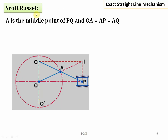Number three is Scott Russell mechanism, which is also an exact straight line motion mechanism. This is the inversion of a single slider crank chain. It consists of four links, three turning pairs, and one sliding pair. The fixed link is link number one, OA is the crank link number two, AP is link number three, and slider P is link number four. There are three turning pairs at O, at A, and at P, and one sliding pair between links number one and four.